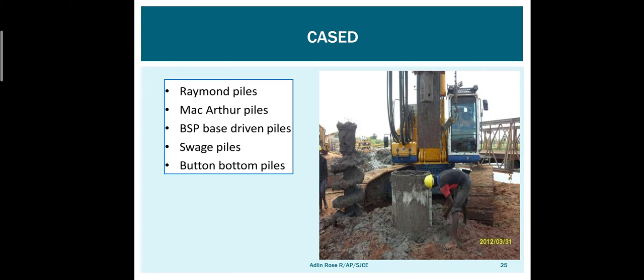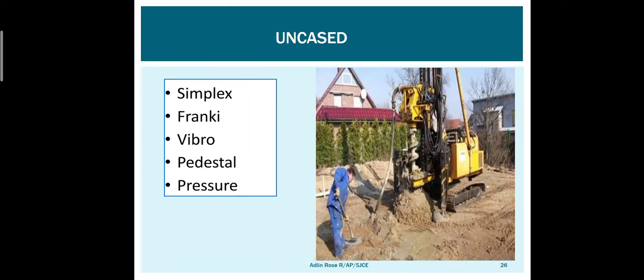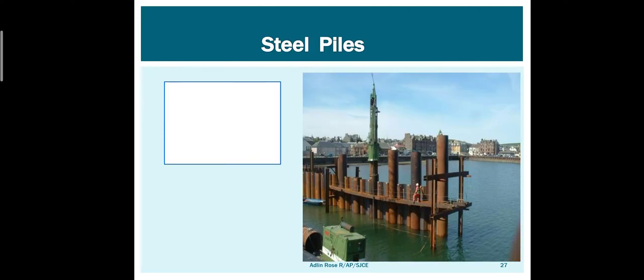Types of cased cast in-situ piles include Raymond's pile, MacArthur pile, BSB base-driven piles, swag pile, and button-bottom piles. Uncased piles include simplex pile, frankie pile, vibro pile, pedestal pile, and pressure pile.